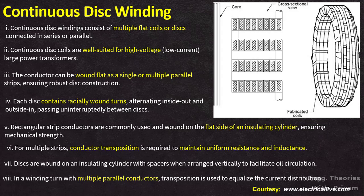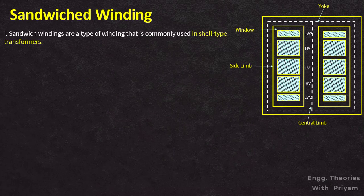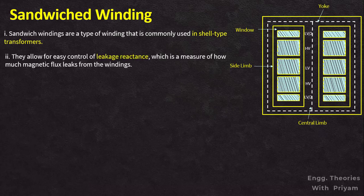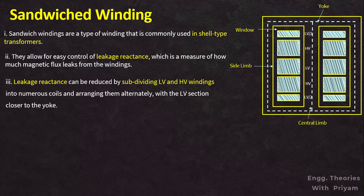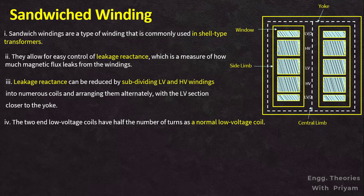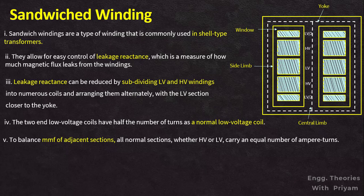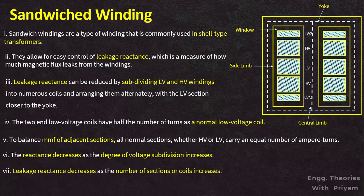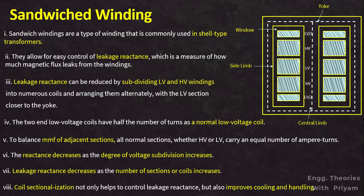Continuous disc windings are reliable and strong, making them a popular choice for both low voltage and high voltage windings in large transformers. Sandwich windings are commonly used in shell type transformers. They allow easy control of leakage reactance by dividing the LV and HV windings into a large number of sections, arranging HV and LV sections alternately with the LV sections closer to the yoke. The two end low voltage coils have half the number of turns of a normal low voltage coil. Each normal section — whether HV or LV — carries the same number of ampere-turns to balance MMF. Leakage reactance decreases as the number of sections increases, and coil sectionalization also improves cooling and handling.